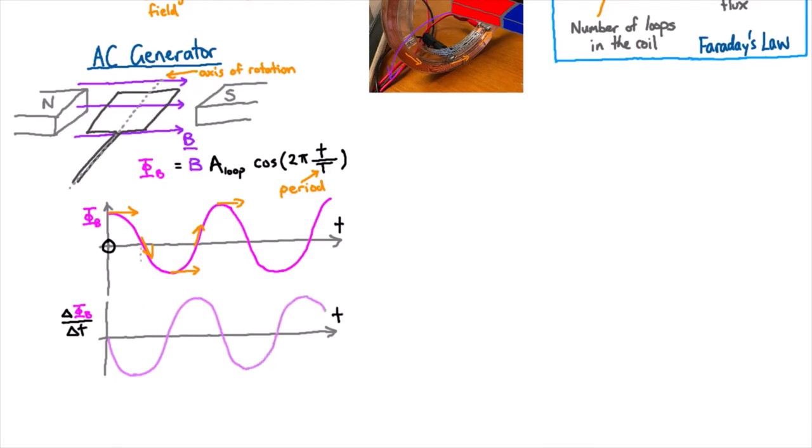And so we can see at the point where the slope is the maximum in the negative direction, we've got a maximum slope there. And when it's flattened out, we have 0 change in our magnetic flux. And then we've got our maximal change and so on.